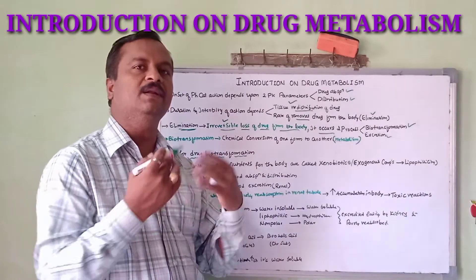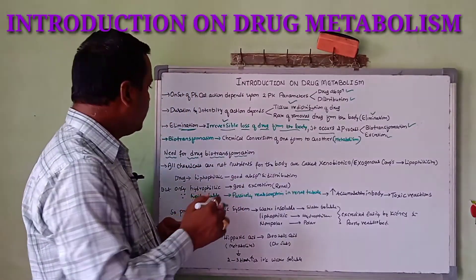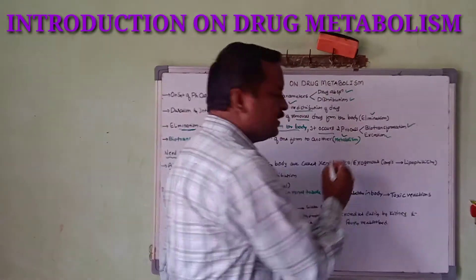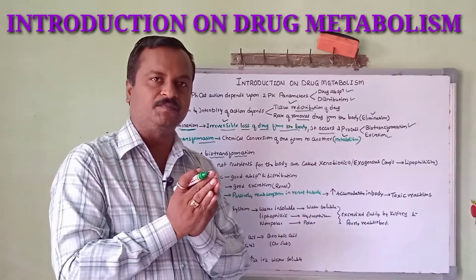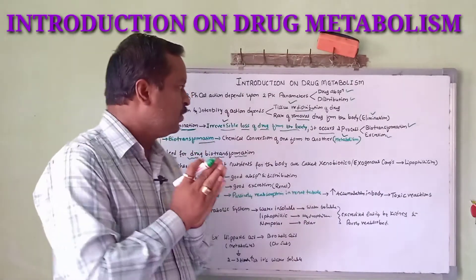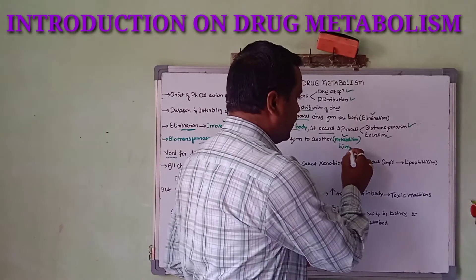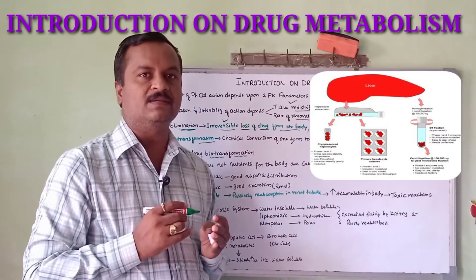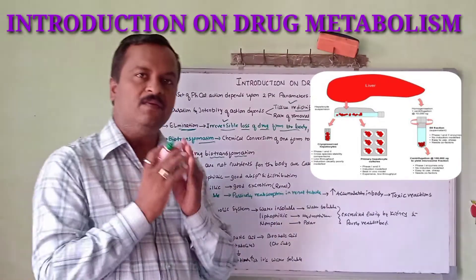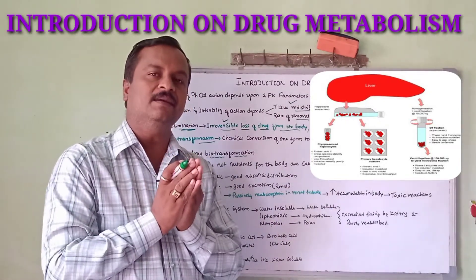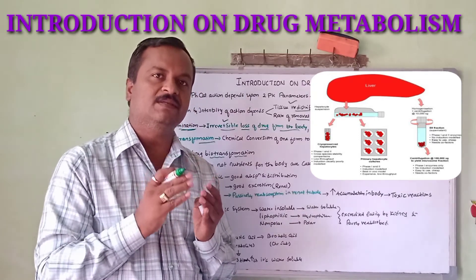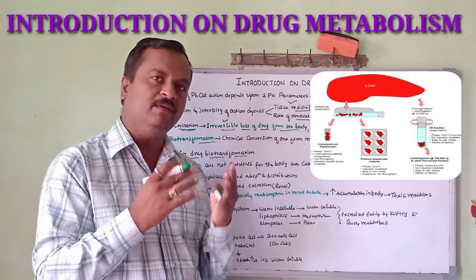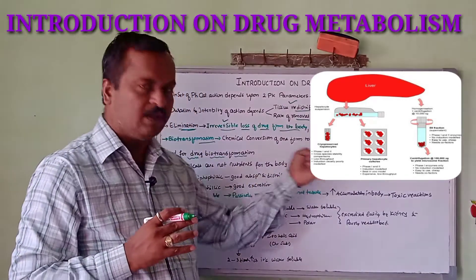Excretion is nothing but complete removal from the body. Whereas biotransformation is nothing but chemical transfer from one form to another form — biotransformation is nothing but metabolism. The major organ for metabolism is the liver. The majority of the different enzymes are secreted by the liver, which is why the liver is the major organ. The liver produces a number of varieties of enzymes essential for converting one form to another form, and the quantity produced by the liver is very high. Hence, major metabolism takes place through the liver only.